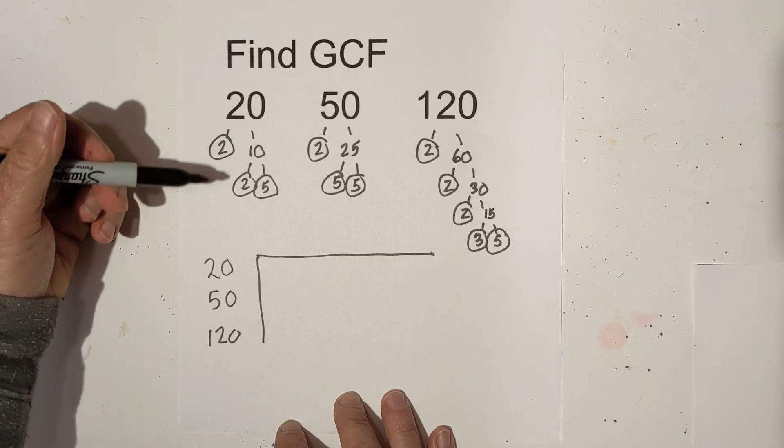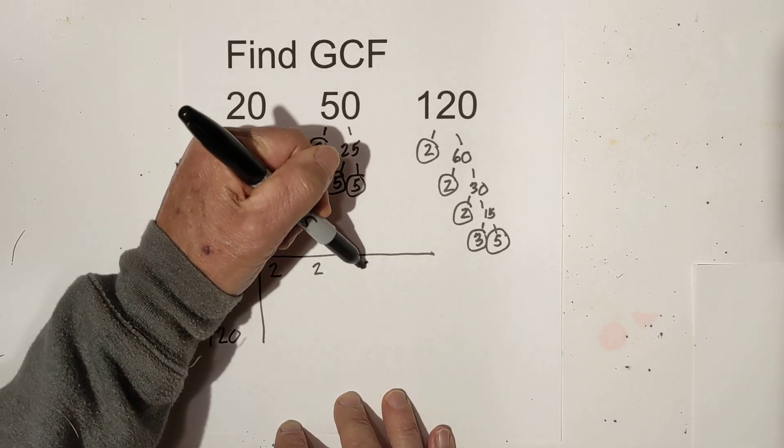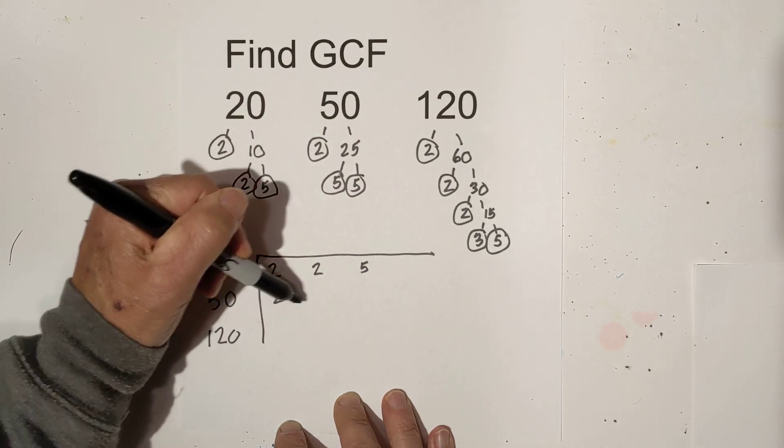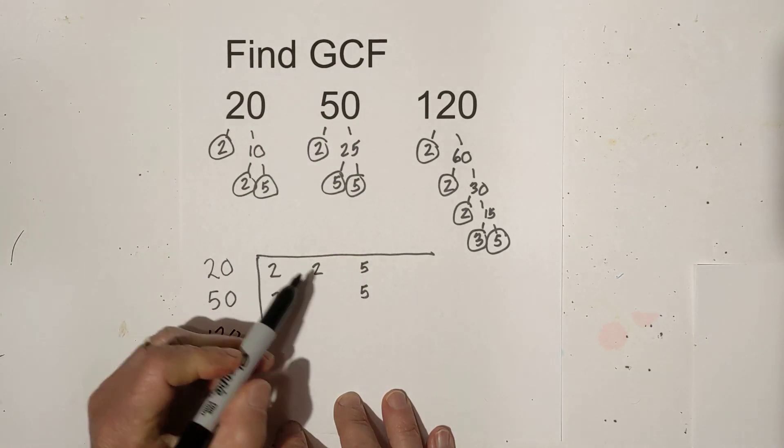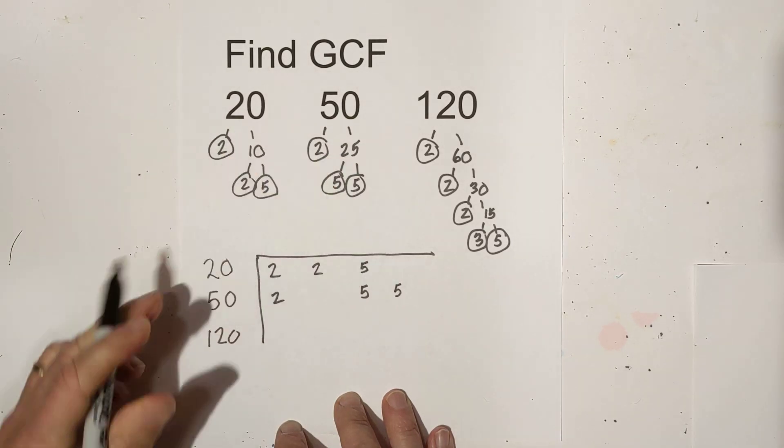So let's go ahead and write the prime numbers for 20. We have 2, 2, and 5. And now for 50, we have 2, 5. Notice that I'm writing it under the 5. This will make sense in just a second. And another 5.